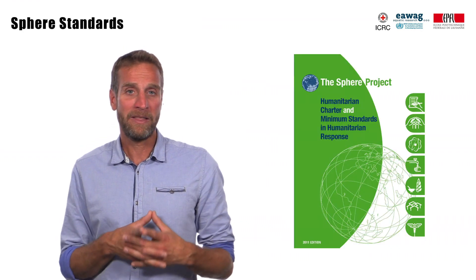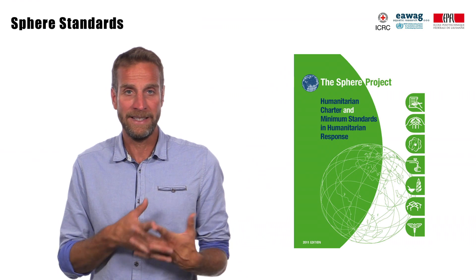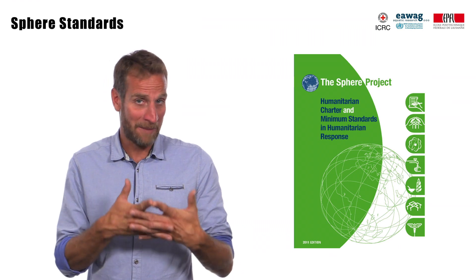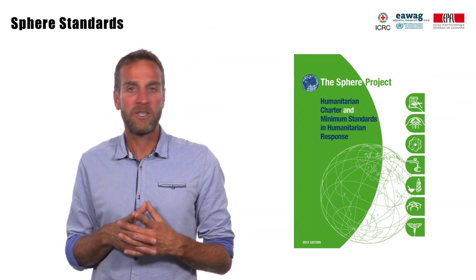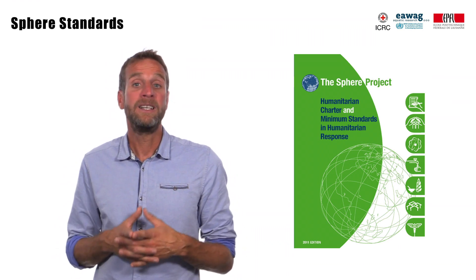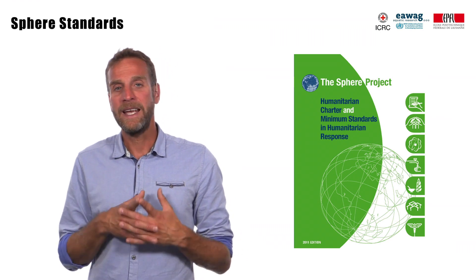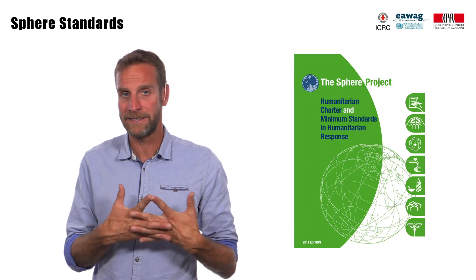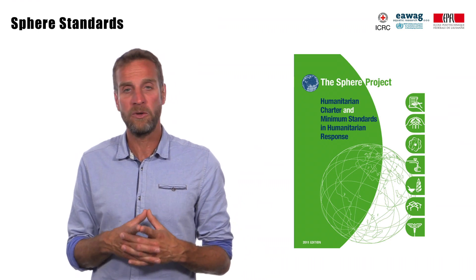Another set of principles that most humanitarian actors agreed to in the nineties is the SPHERE project, which we already saw last week. It contains the minimum standards of core humanitarian assistance, such as food security and nutrition, health, shelter, and water supply, sanitation and hygiene promotion. Its aim is to help improve the quality of assistance provided to people affected by disaster or conflict, as well as the accountability of humanitarian actors.